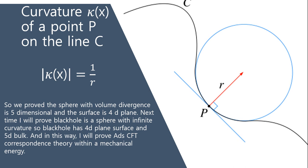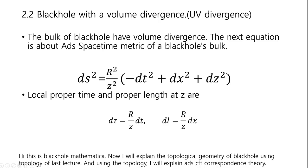Next time, I will prove a black hole has a sphere with infinite curvature, so a black hole has a 4D plane surface and a 5D bulk. And in this way, I will prove ADS-CFT correspondence theory within the mechanical energy. This is Black Hole Mathematica. Now I will explain the topological geometry of a black hole using the topology of the last lecture, and using this topology, I will explain ADS-CFT correspondence theory.